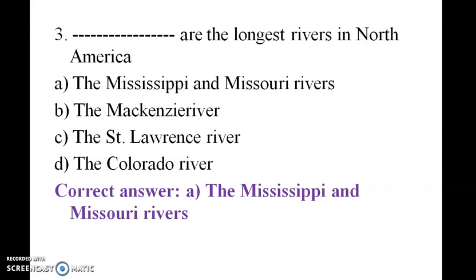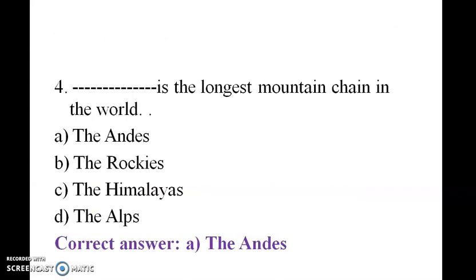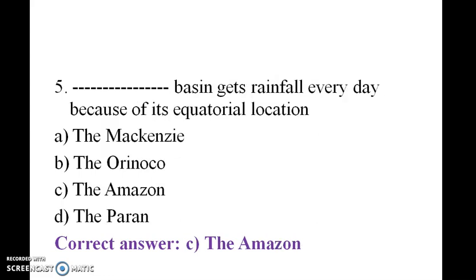Dash is the longest mountain chain in the world — the Andes mountain chain is the longest. Dash basin gets rainfall every day because of its equatorial location.